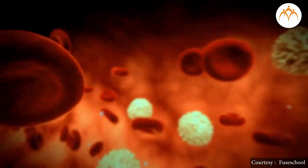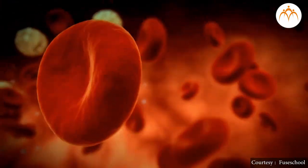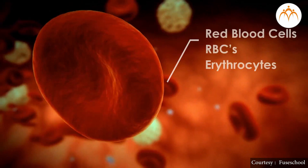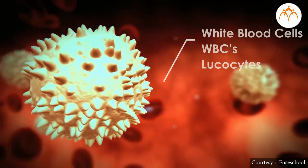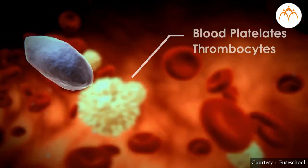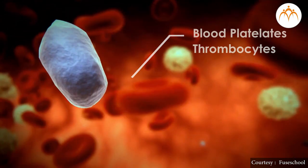Suspended in plasma are three major types of blood cells: namely red blood cells or RBCs or erythrocytes, white blood cells or WBCs or leukocytes, and blood platelets or thrombocytes.